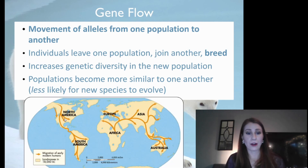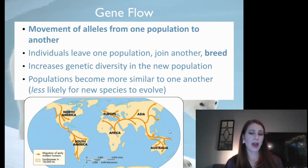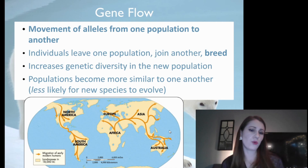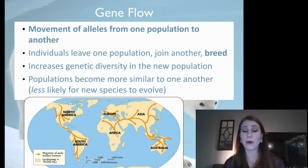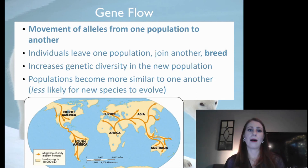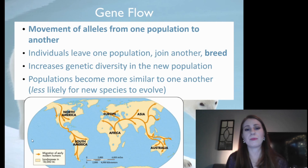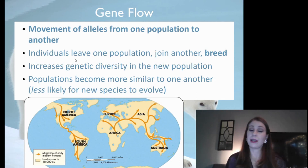A lot of times people migrated to different areas, bringing new traits into new areas of the world. Nowadays it's so much easier for gene flow to occur because we can jump on a plane and move our whole life to a new country, to a new group of people. You can have babies with anyone on any part of the planet, changing populations whenever you want to. So gene flow is much easier for humans than it is for animals because of our transportation abilities.